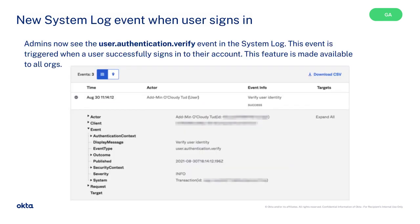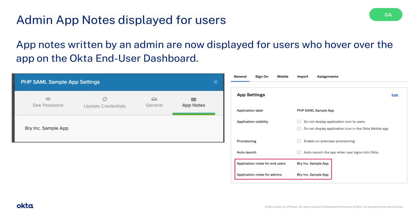Admins now see the user.authentication.verify event in the system log. This event is triggered when a user successfully signs in to their account. This feature is made available to all organizations. App notes written by an admin are now displayed for users who hover over the app on the Okta End User Dashboard.